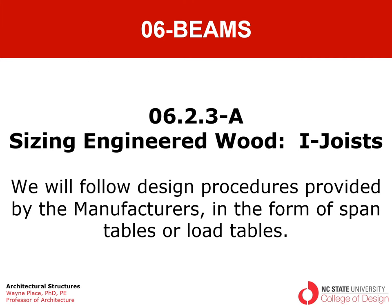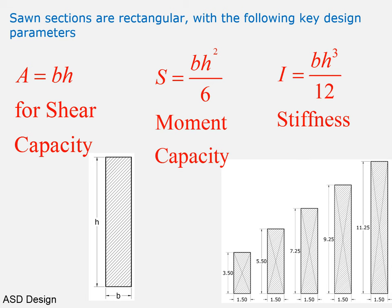We're going to follow the manufacturers' design procedures, which are going to look very different from what we talked about for sizing solid sawn lumber. When we talked about sawn sections, we said they're rectangular and have key design parameters: area is key for shear capacity, section modulus is key for moment capacity, and moment of inertia is the key cross-sectional property for beam stiffness. The cross section is described with base b and height h, and standard size sections are shown in a diagram.